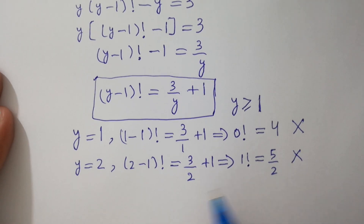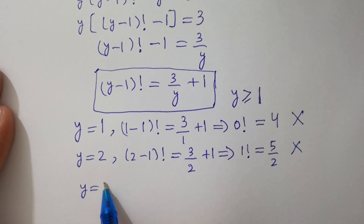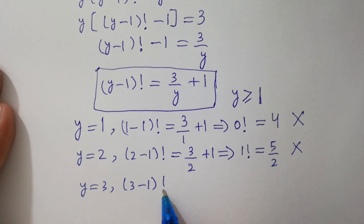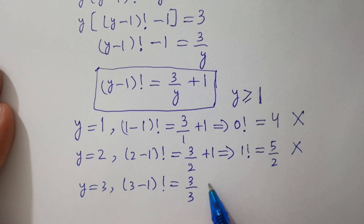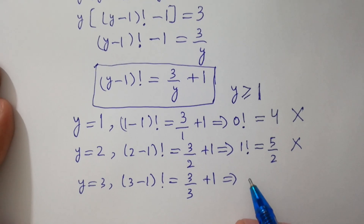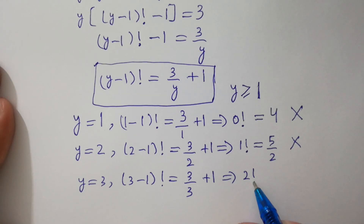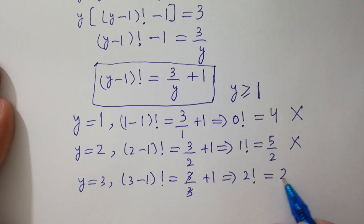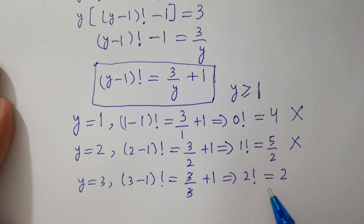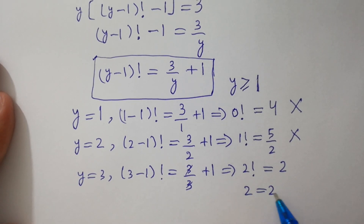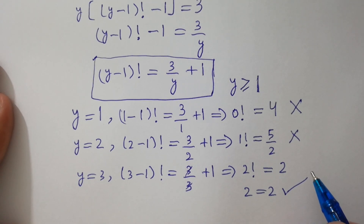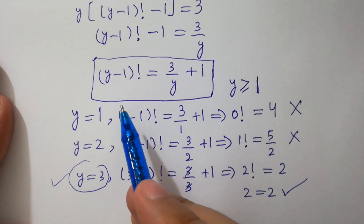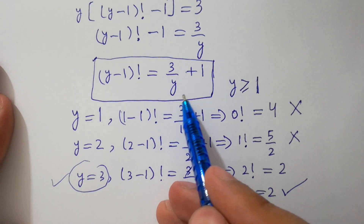If y equals 3: (3 minus 1) factorial equals 3 over 3 plus 1. So 2 factorial equals 3 over 3 plus 1. The 3 cancels, giving 2 factorial equals 1 plus 1 equals 2. So 2 factorial equals 2, which is correct. We have shown that y equals 3 satisfies the equation (y minus 1) factorial equals 3 over y plus 1.